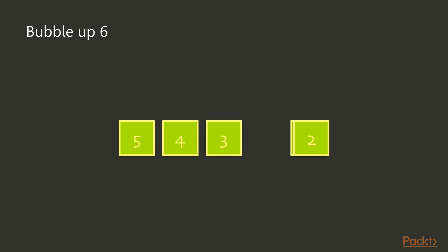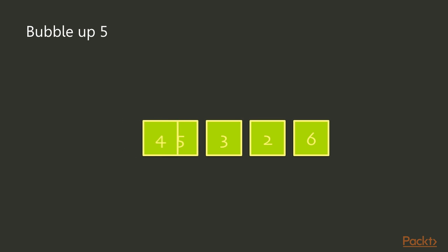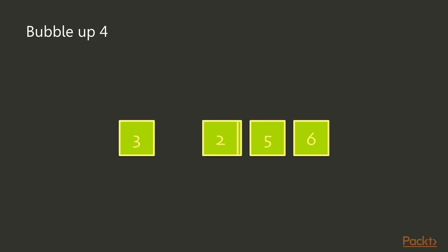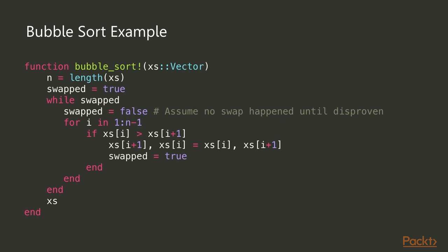After swapping six up, we go through the array again from the beginning. Now we compare five to four; since five is larger we swap them, and five moves up. Five is less than six so it doesn't continue further. Then we start over again with four bubbling up. This keeps going until the array is fully sorted.